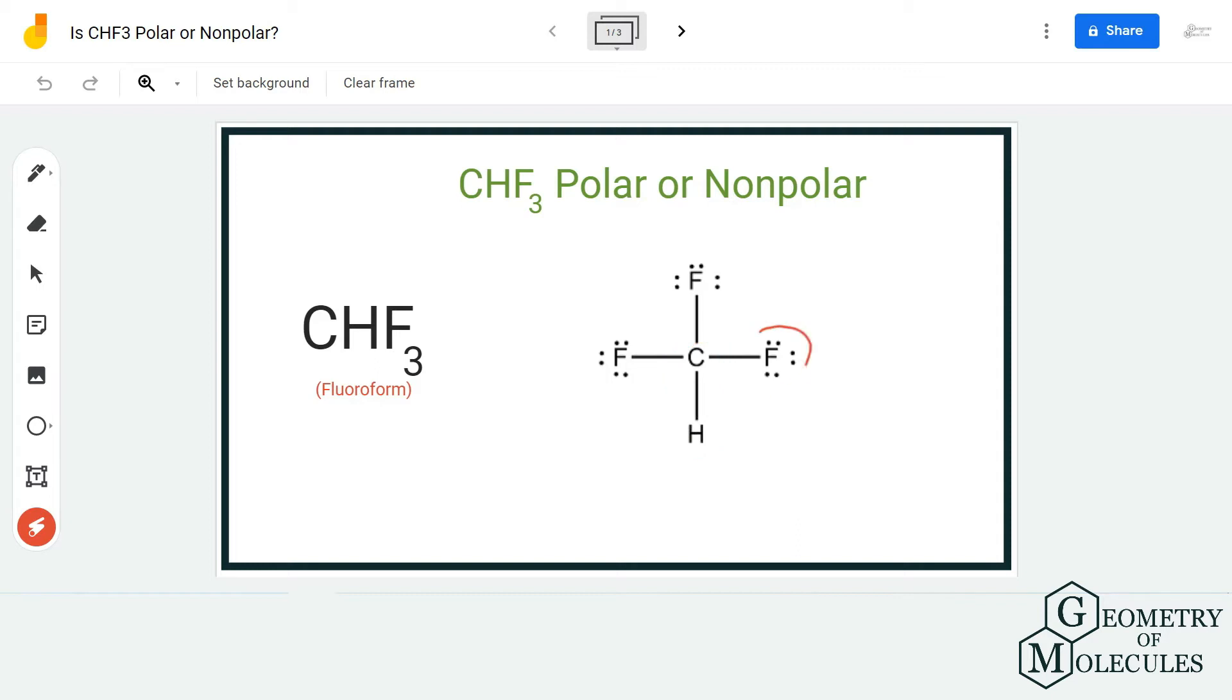Because of that, there will be a dipole moment in this molecule. As there are three fluorine atoms and one hydrogen atom, the distribution of charges will be quite uneven.